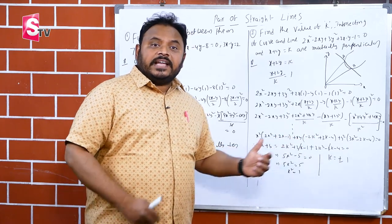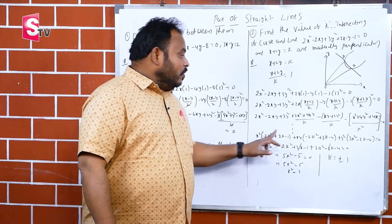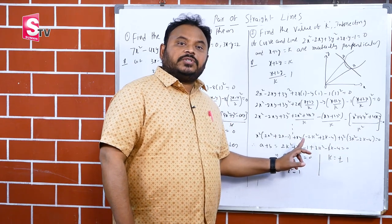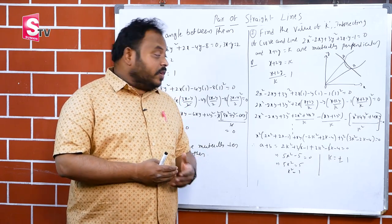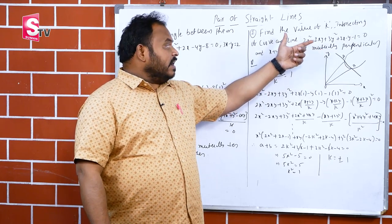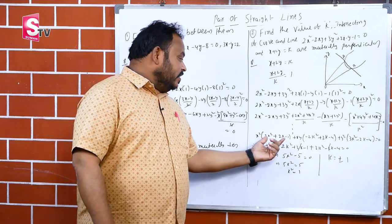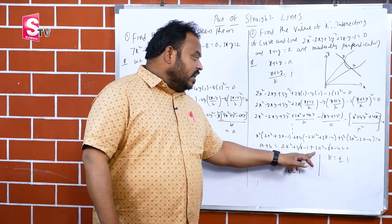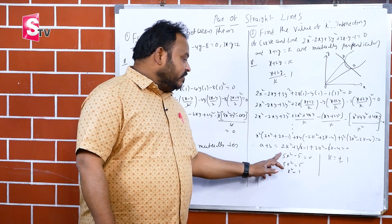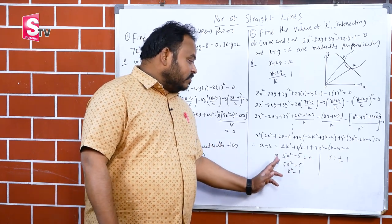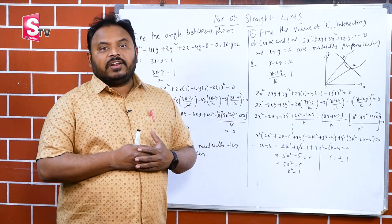Converting to the form ax² plus 2hxy plus by² equals 0, and applying the condition a plus b equals 0 (since the two lines are mutually perpendicular), we get: a value (2k minus 1 times something) plus b value gives 5k² minus 5 equals 0. Therefore 5k² equals 5, k² equals 1, and k equals plus or minus 1.